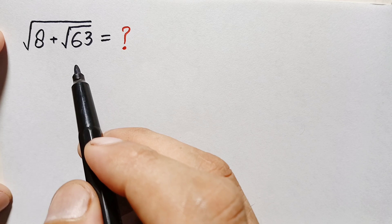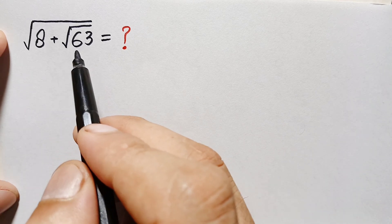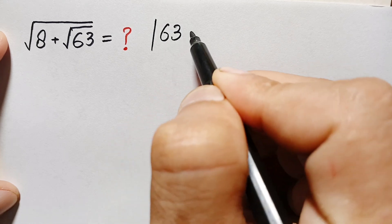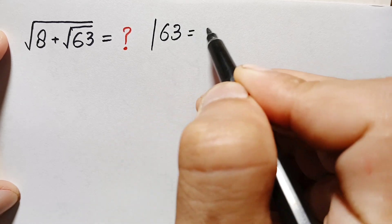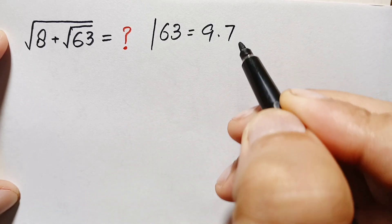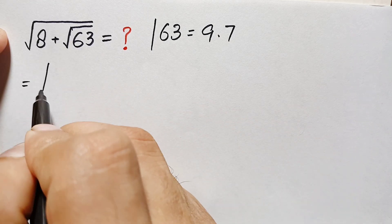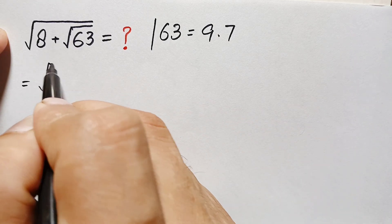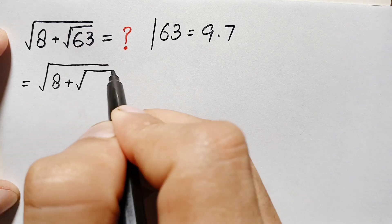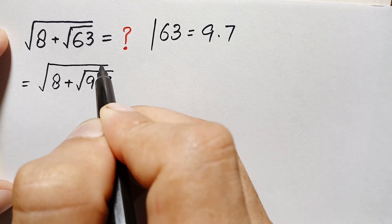To solve this problem, first we can write 63 as a product: 63 can be written as 9 times 7. So we replace it, and this becomes the whole square root of 8 plus square root of 9 times 7.